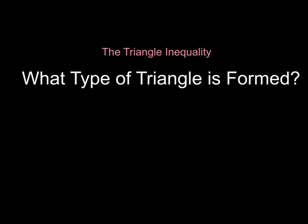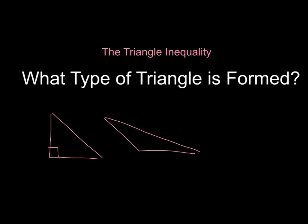The triangle inequality tells us that in order for three side lengths to form a triangle, the sum of the two shorter sides has to be greater than the third side. Otherwise, there won't be a triangle resulting. But it also tells us what type of triangle is formed from those side lengths — whether it will form a right triangle, an obtuse triangle, or an acute triangle.